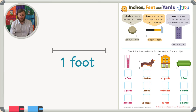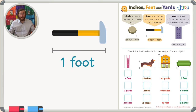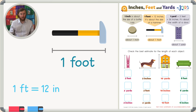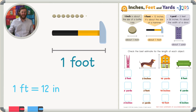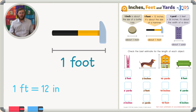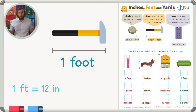Let's talk about one foot. A foot is about the size of a hammer. A foot is 12 inches long, so it'd be like putting 12 bottle caps next to each other, but a hammer is a better estimate. Can you think of other objects that are about the length of one foot?